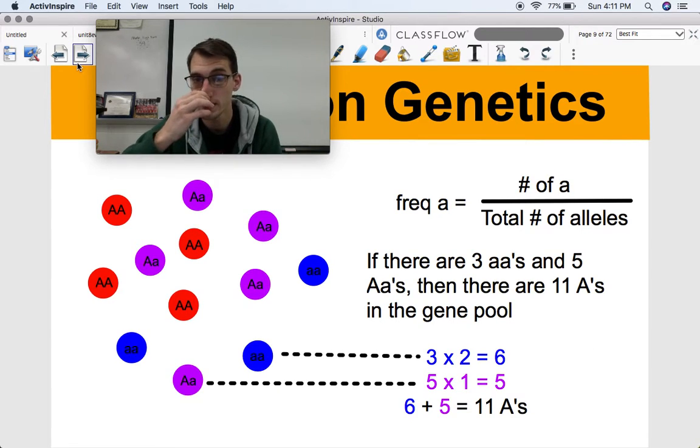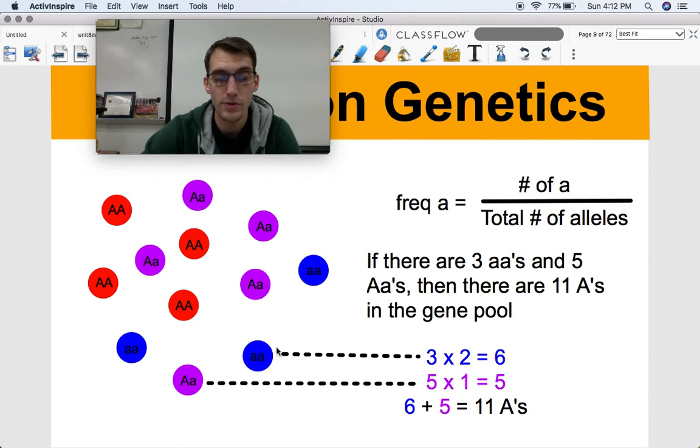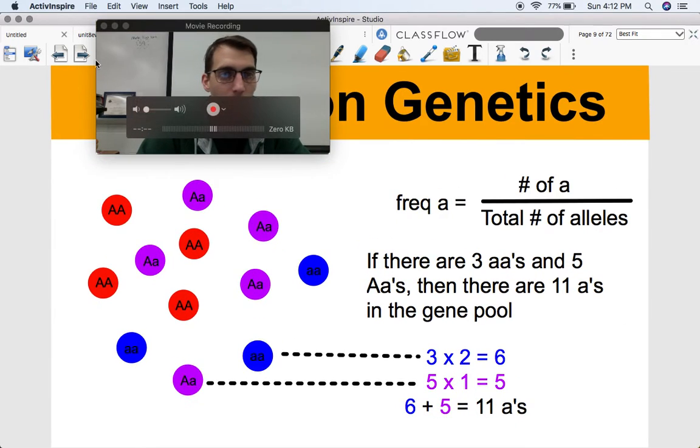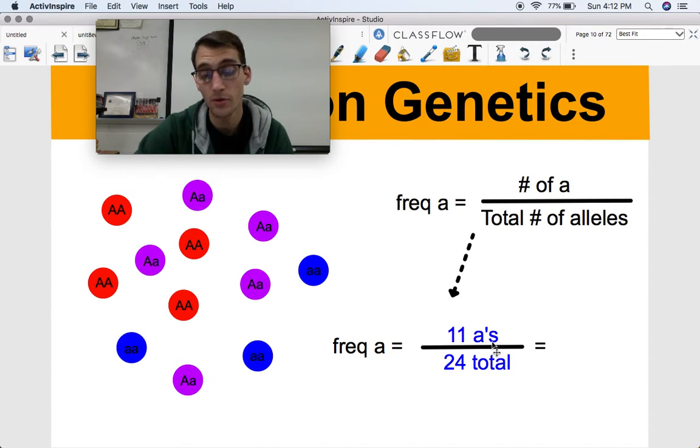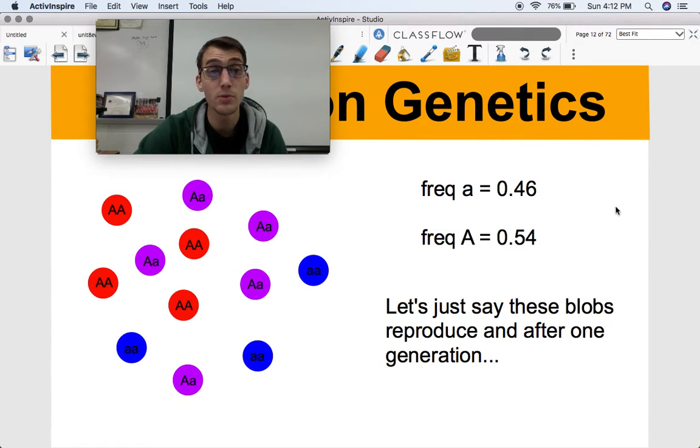So let's try it for the recessive allele. It's the same thing as before, except we're counting the little a's. So it's the number of the recessive alleles divided by the total. Same thing as before. There's three homozygous recessive individuals, that gives us six recessive alleles, and five heterozygotes, that gives us five more recessive alleles, that means there's a grand total of 11 little a's, 11 recessive alleles in our gene pool. So we have 11 little a's, and so let's do some math. If we have 11 little a's out of the 24 total, 11 recessive alleles, what do we get? We have 46% of recessive allele frequency. So the frequency of the recessive allele is 0.46, and the frequency of the dominant allele is 0.54.